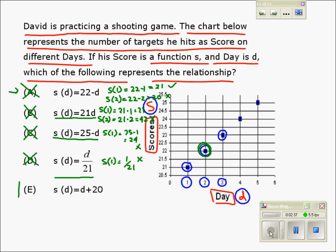Now we can conclude that option E should be the right option, but let's check to see if it works first. Say when D equals 1, S becomes 21. That's correct. When D equals 2, S becomes 22. Correct again. When D equals 3, S becomes 23. Also correct.